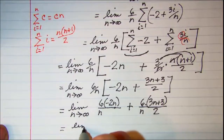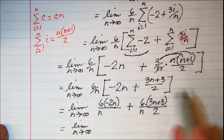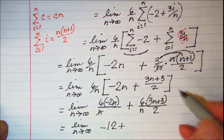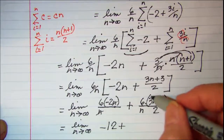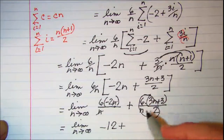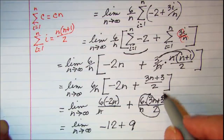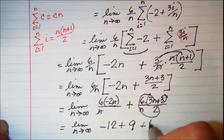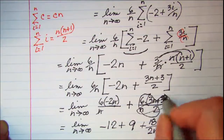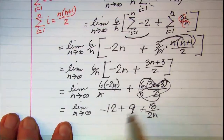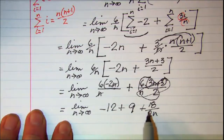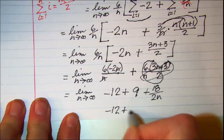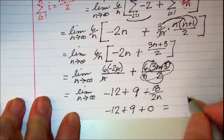Everybody has their own way of simplifying these expressions. The n's cancel giving negative 12, 18n over 2n gives 9, and 18 over 2n gives a term that goes to 0 as n approaches infinity. Taking the limit, that last term equals 0, leaving negative 12 plus 9 plus 0, which gives us negative 3.